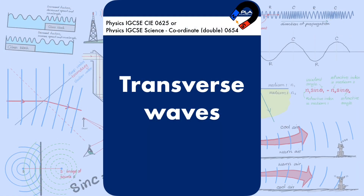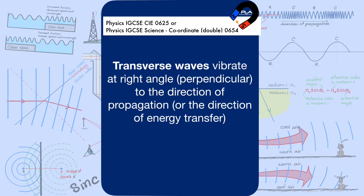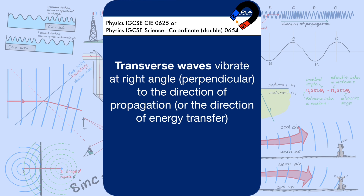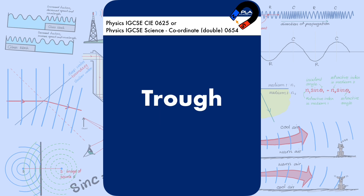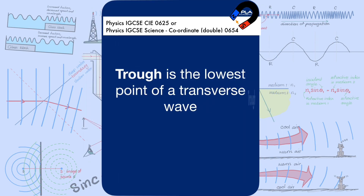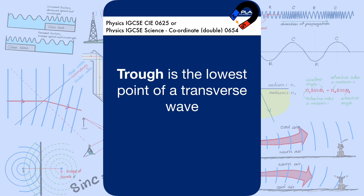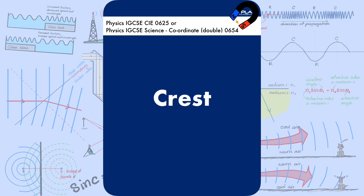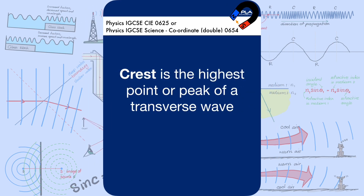Transverse waves vibrate at right angles, perpendicular to the direction of propagation or the direction of energy transfer. The trough is the lowest point of a transverse wave, and the crest is the highest point or peak of a transverse wave.